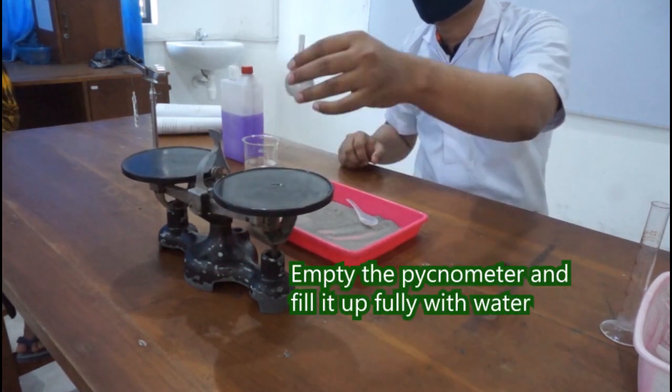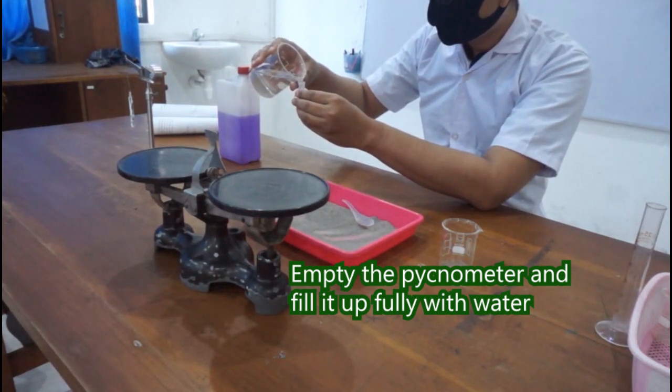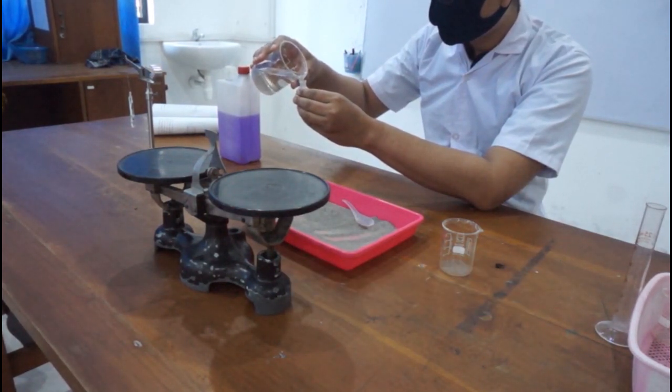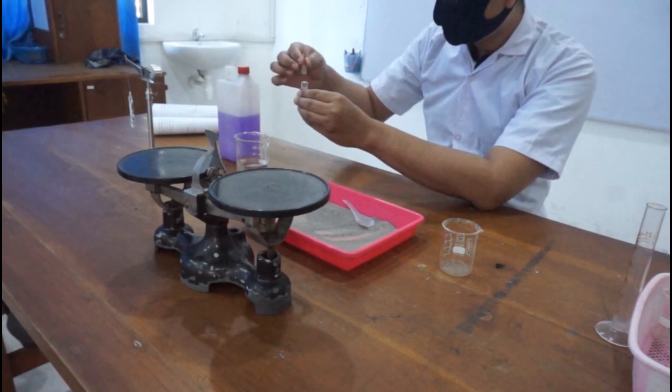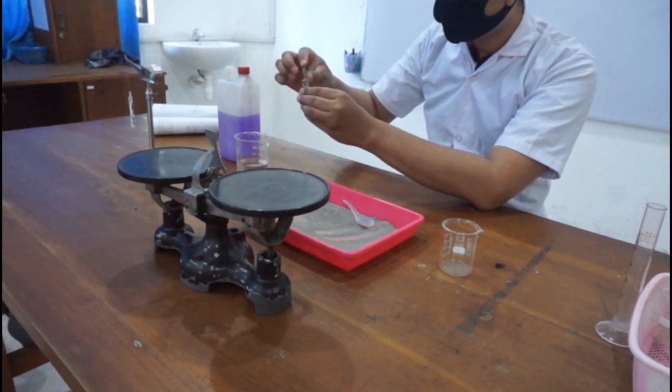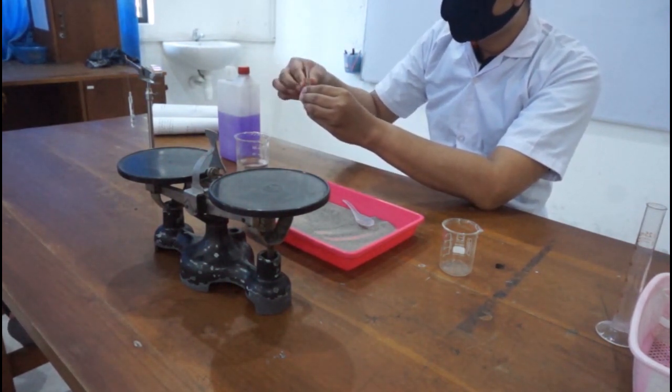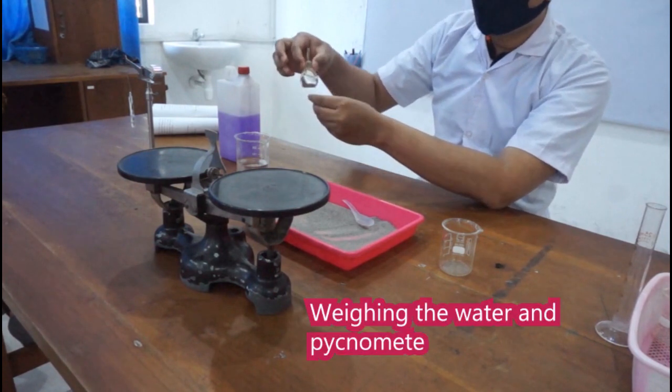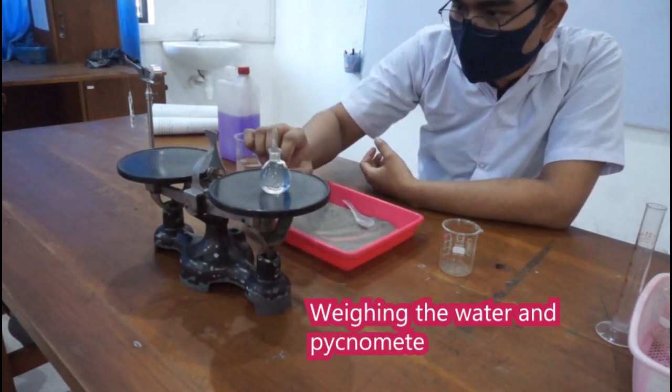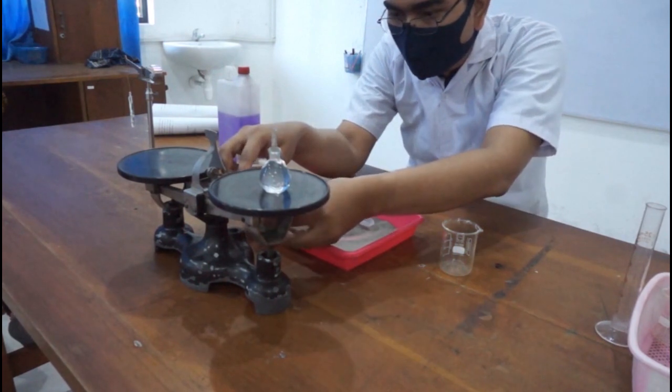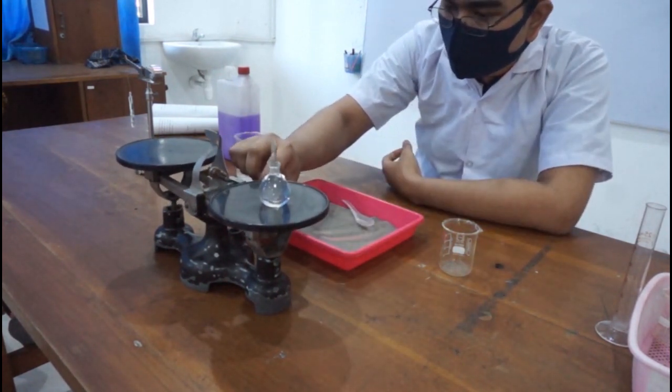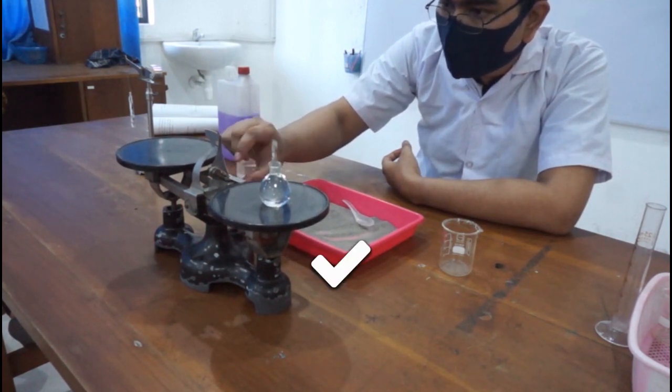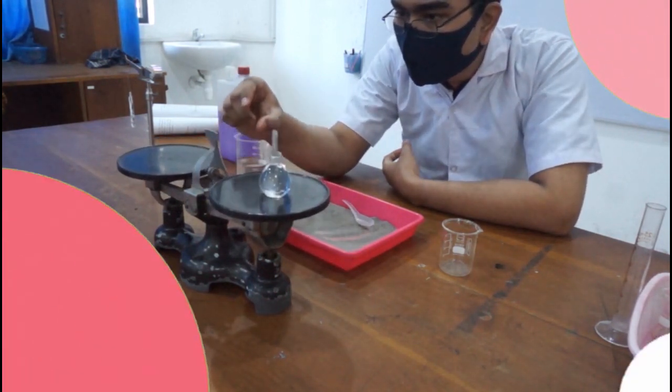You need to empty the pycnometer and fill it up fully with water. Make sure there is no sand. Make sure that it's empty. Then fill it up with just water, fully water. Then you need to measure to know what's the mass of the pycnometer and the water in it. Okay, so then you're ready for the calculation.